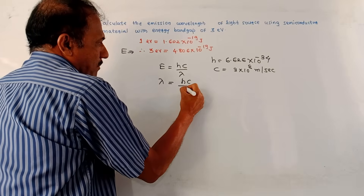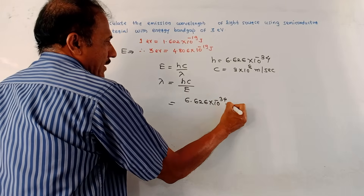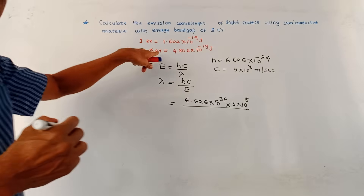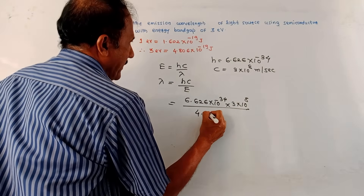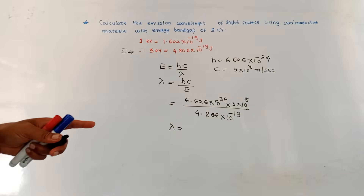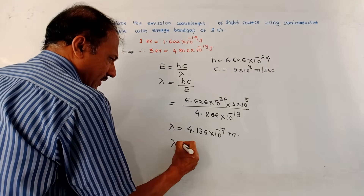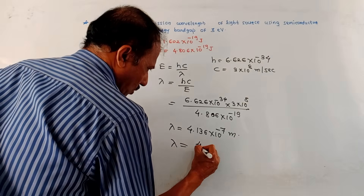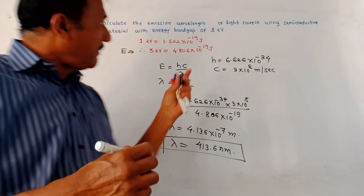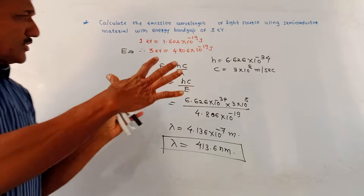Rearranging, λ = hc/E. Substituting the values: λ = (6.626 × 10⁻³⁴ × 3 × 10⁸) / (4.806 × 10⁻¹⁹). Solving this gives λ = 4.136 × 10⁻⁷ meters, which converts to 413.6 nanometers. This is the wavelength emitted by a light source using a semiconducting material with an energy bandgap of 3 eV. These numericals are very simple — you just need one formula and the value of Planck's constant.